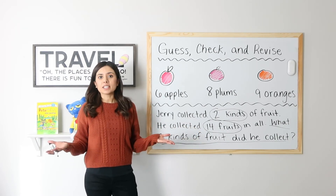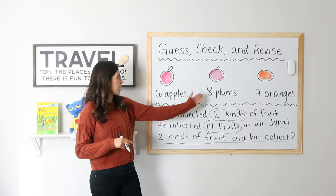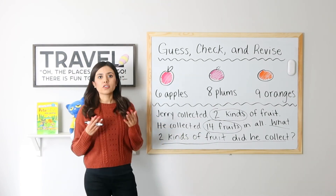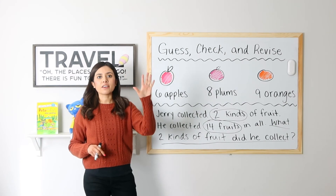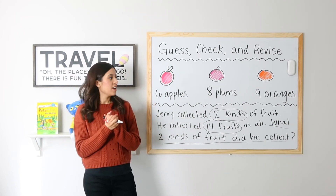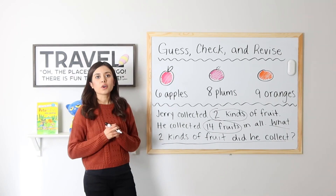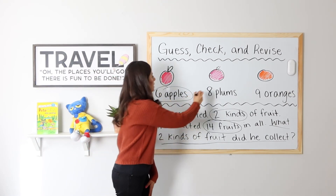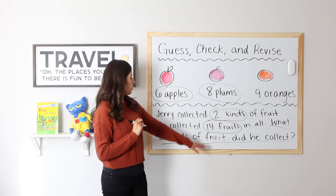I'm going to guess and my first guess is six and eight. Let's see if six plus eight equals 14. Six plus eight more is 14. I was actually correct on my first try. I know that Jerry collected six apples and eight plums. That gives me a total of 14.